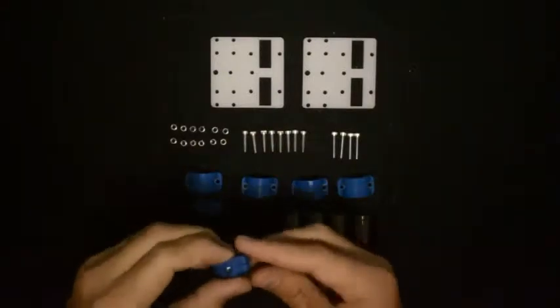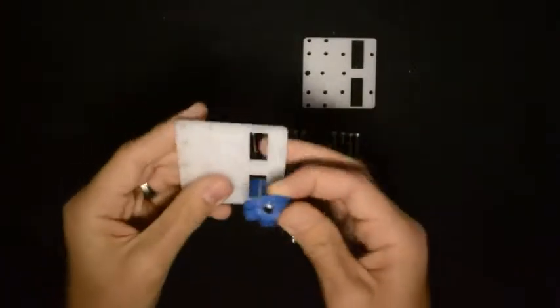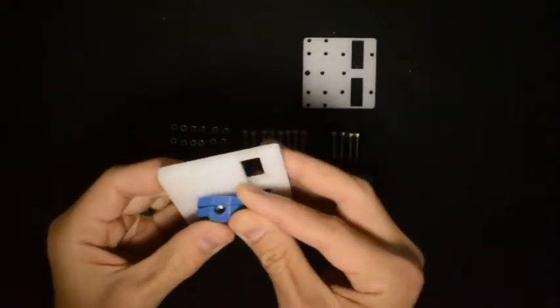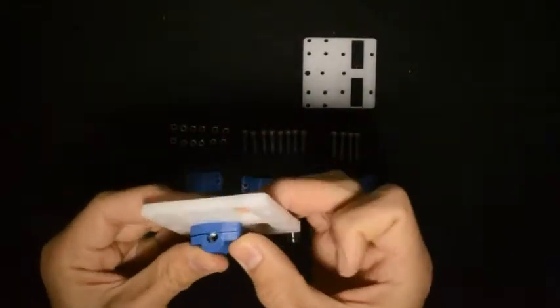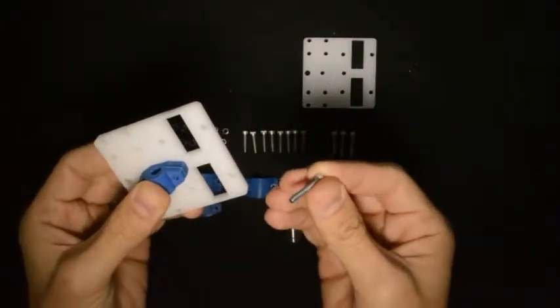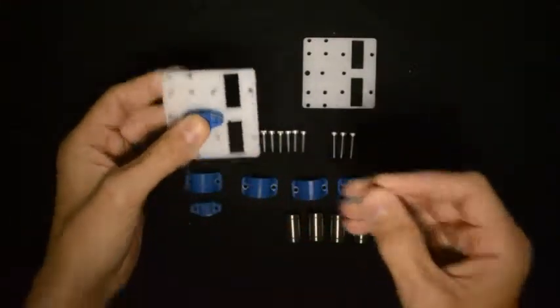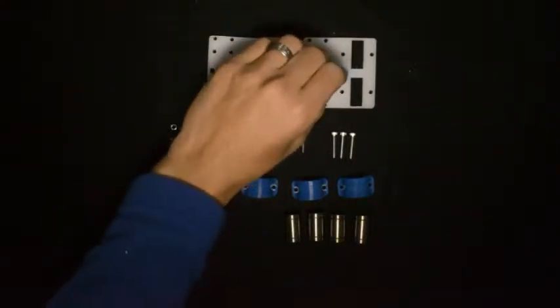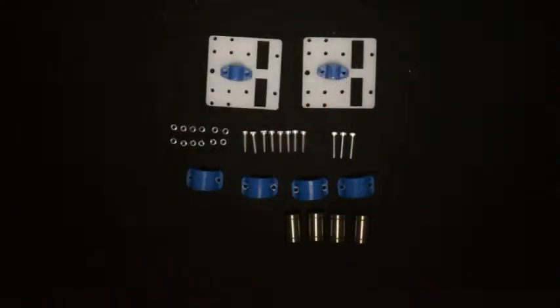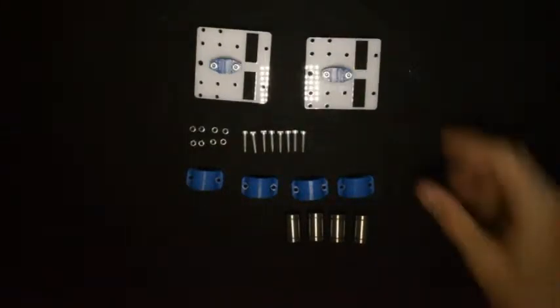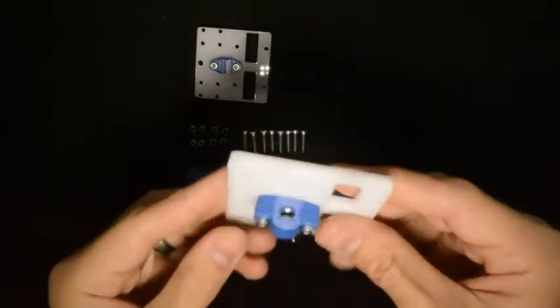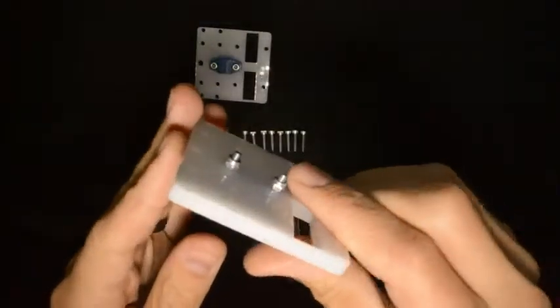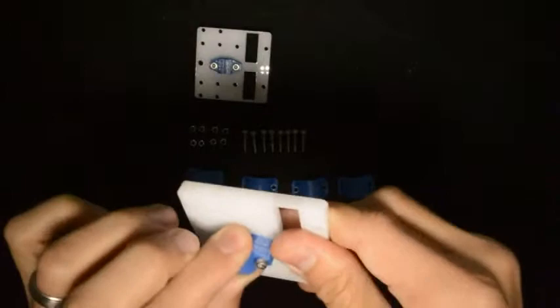Now we will bolt them down onto these components and mount them onto those positions. For this we will use the M3 by 20 screws. One will go there and the other one will go there. Once you've done that, both of them should look like this, nicely bolted down.